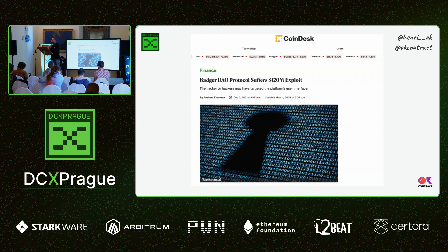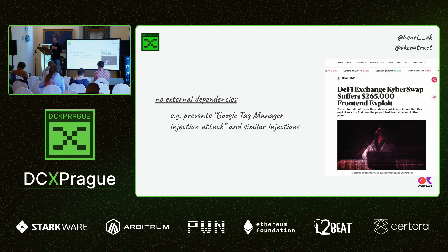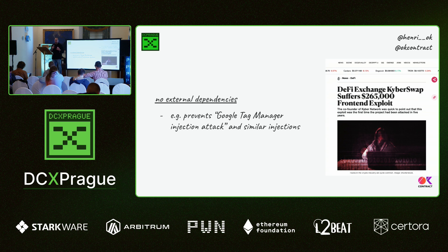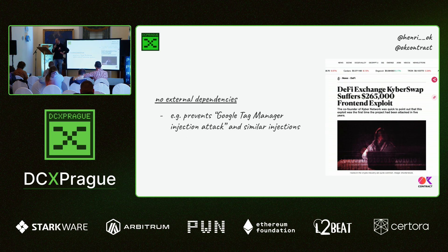Because of that, we need to really minimize the code in our frontends — and that includes no external dependencies. In a similar manner, KyberSwap was attacked through Google Tag Manager. If you look at most projects today — and this is a discussion mentioned a few talks ago about data collection and privacy — most frontends right now use Google Tag Manager, which is also a vector for injection attacks.